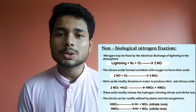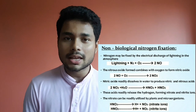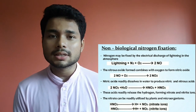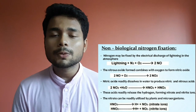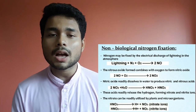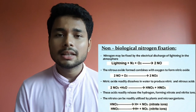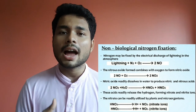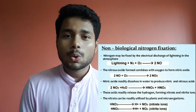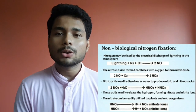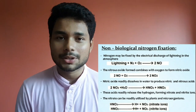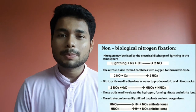The broken nitrogen reacts with oxygen to form various nitric oxides — this is the physical process. Then, in the chemical process, nitric oxide reacts with water to form nitric acid, and the nitric acid releases nitrate ions which are directly utilized by plants.